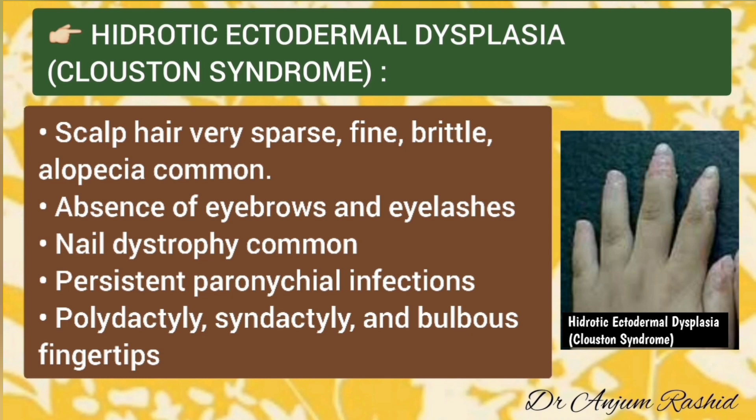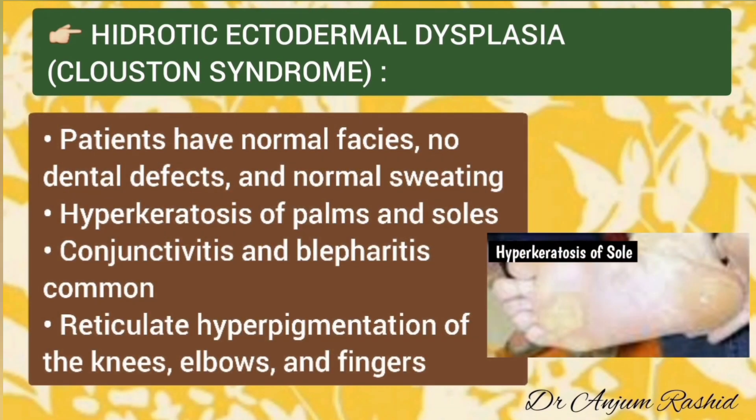There may be polydactyly, syndactyly, and bulbous fingertips. However, patients have normal faces with no specific dental defects and normal sweating. There may be hyperkeratosis of palms and soles. Conjunctivitis and blepharitis are also common, and reticulate hyperpigmentation of knees, elbows, and fingers may be present.